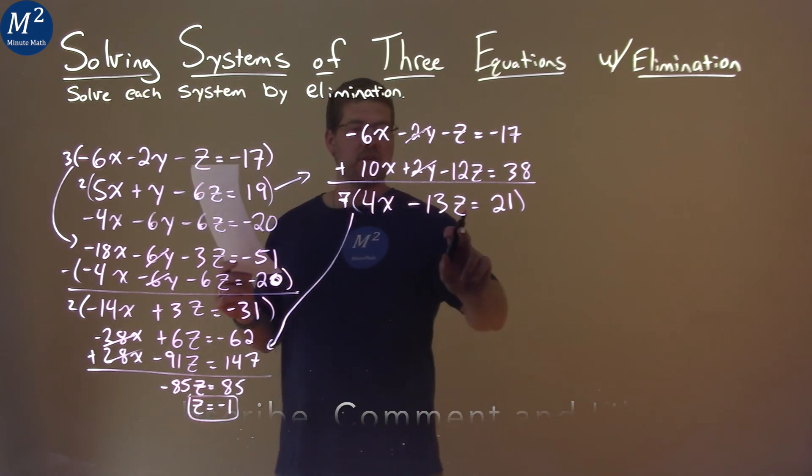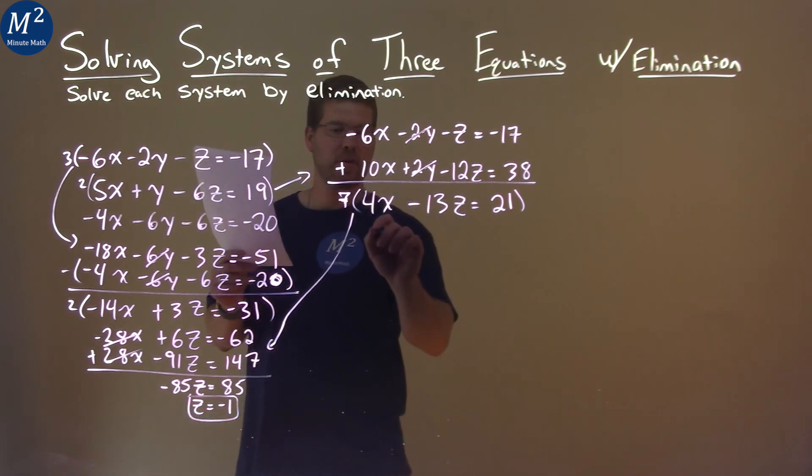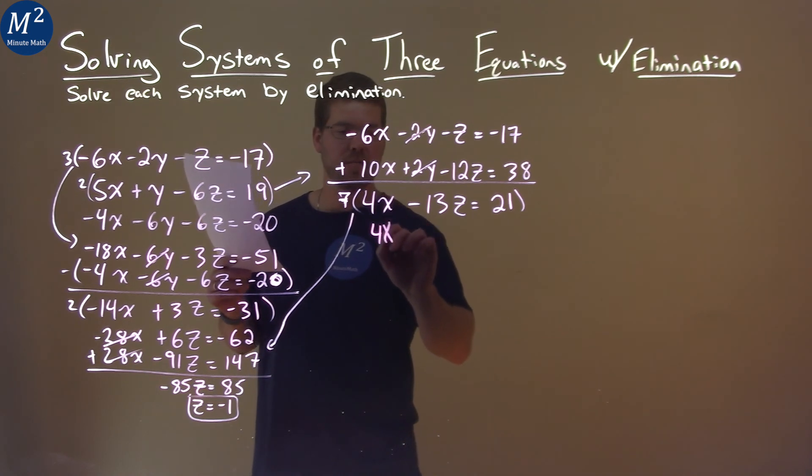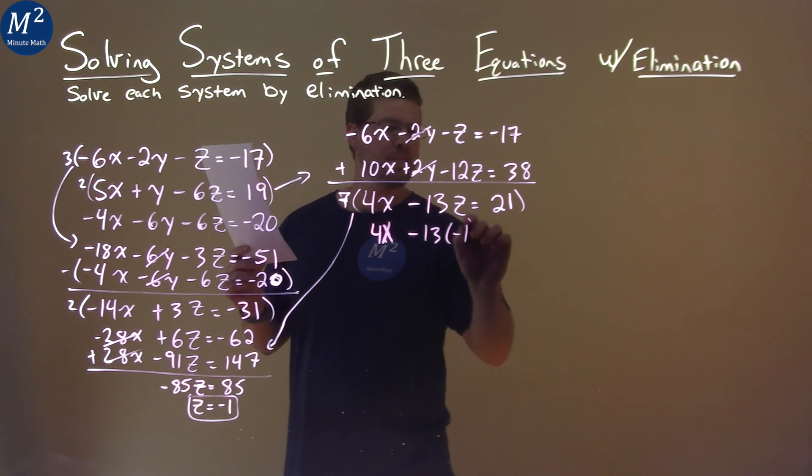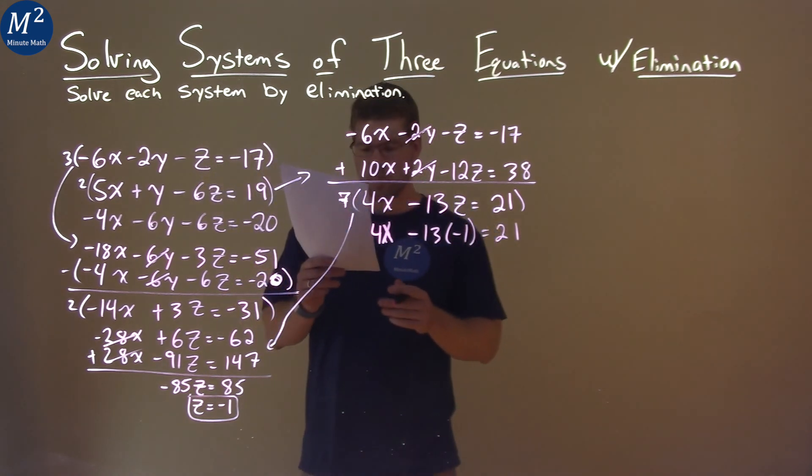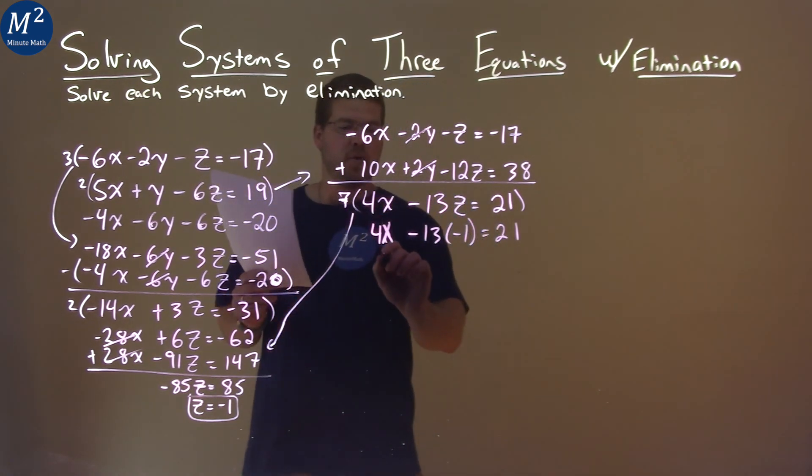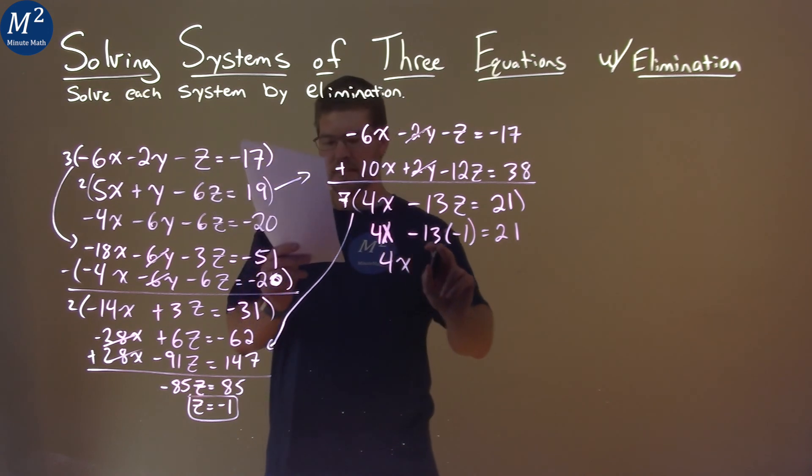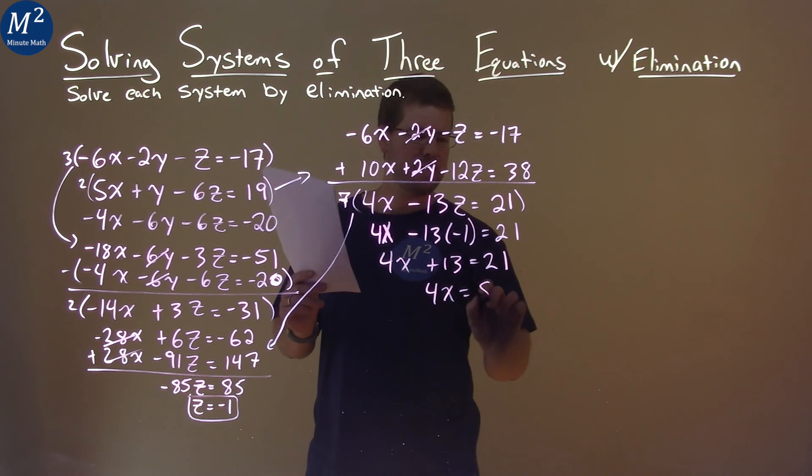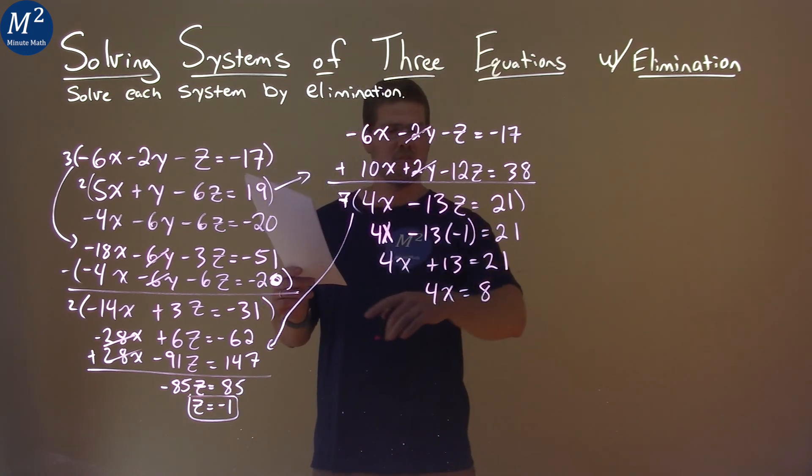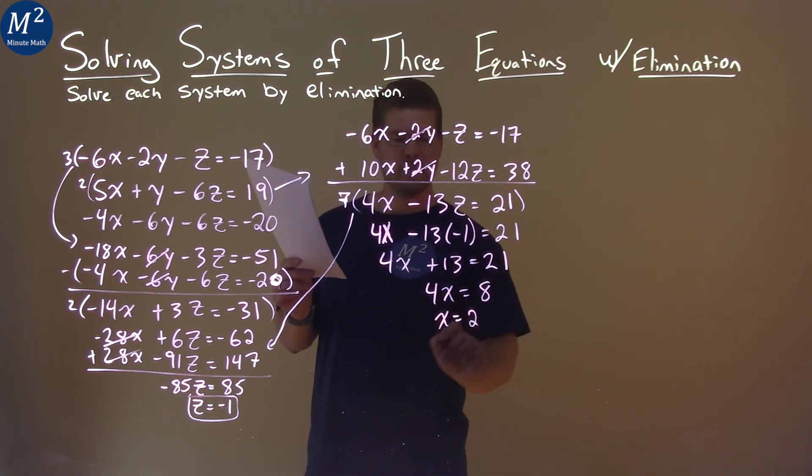So we have 4 times x minus 13 times z, which is negative 1, equals positive 21. 4x comes down, negative 13 times negative 1 is positive 13, equals 21. Subtract 13 from both sides, and we have 4x on the left. On the right, 21 minus 13 is 8. Divide both sides by 4, and x equals positive 2.